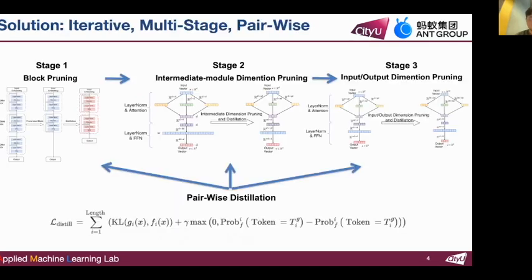To address these challenges, we propose a solution: an iterative multi-stage pairwise distillation-enhanced approach to pruning and distillation. We carefully adjusted the granularity at various stages, including block, intermediate module dimension, and input-output dimension, iteratively operating between pruning and distillation at each stage, complemented by a specially designed pairwise loss.